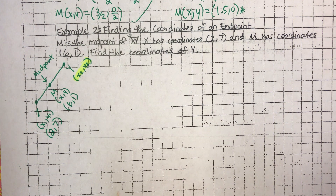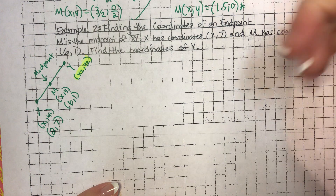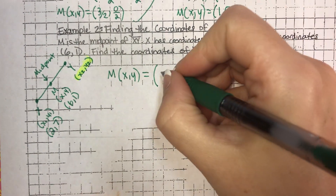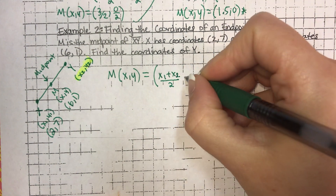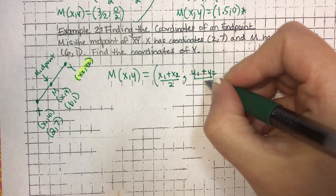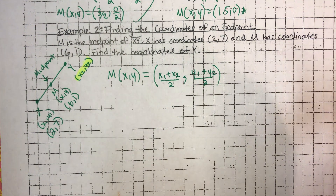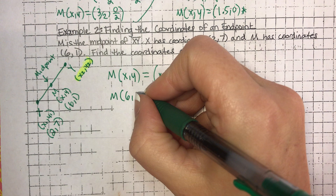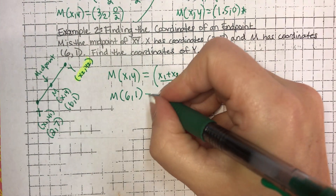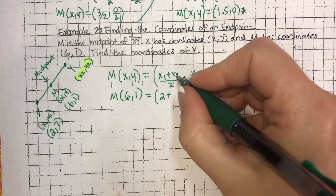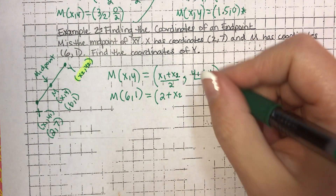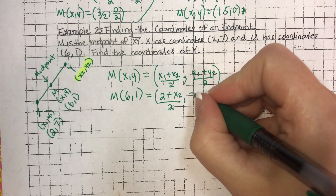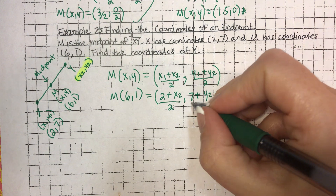To do that, we're just going to go ahead and write our formula down. Our formula - remember for the midpoint, and you need to write this every time - our midpoint is X, Y equals the average of the X values, which is X1 plus X2 all over 2, comma, the average of the Y values, Y1 plus Y2, all over 2. Then we just substitute in our values. The midpoint is 6, 1. So 6 is my X, 1 is my Y, and this equals X1 which is 2, plus X2 all over 2, comma, Y1 is 7, plus Y2, all over 2.